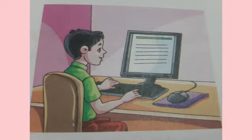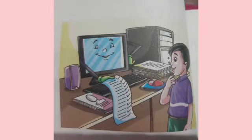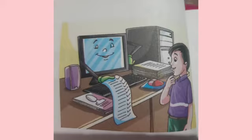Children, first feature of a computer is: computers can work with hundred percent accuracy — they don't make mistakes. Next feature is: computers work at a very fast speed. Next feature is: a computer can do many kinds of work.